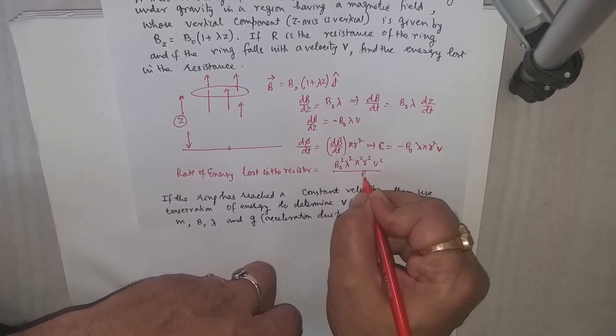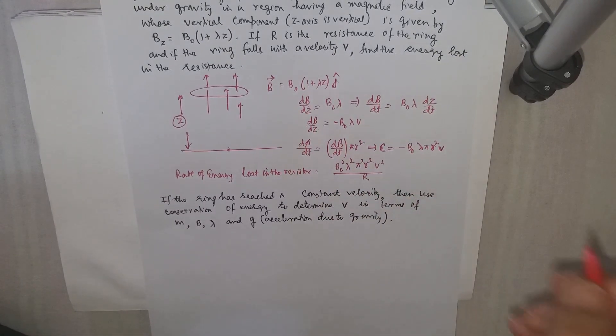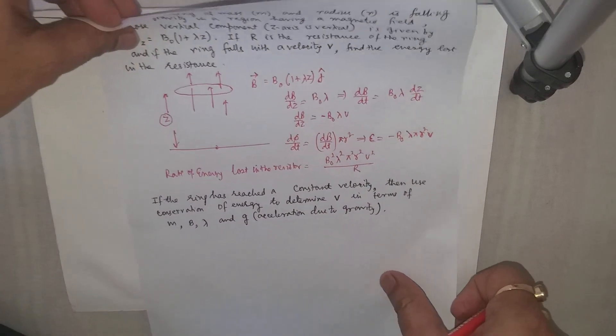That is B₀²λ²π²r²v² divided by r. This will be the rate of loss of energy in the resistor.